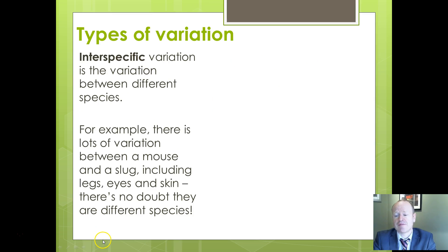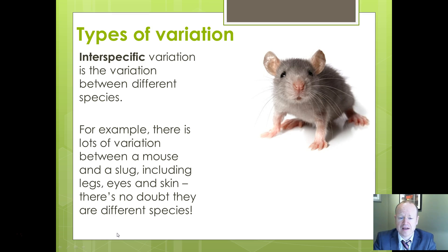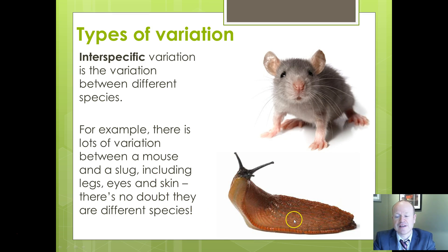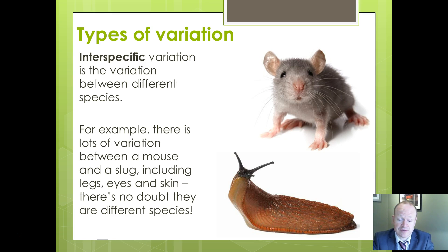Let's consider one of the pairs of variation types you need from the specification. Inter-specific variation is the variation between different species. So between a mouse and a slug, there are a number of variations — eyes on the side of the head versus eyes on stalks, furry skin versus slimy skin, legs versus no legs. Remember, different species doesn't necessarily mean they aren't fairly similar — there are many species of seagull which are different species yet look fairly similar superficially.